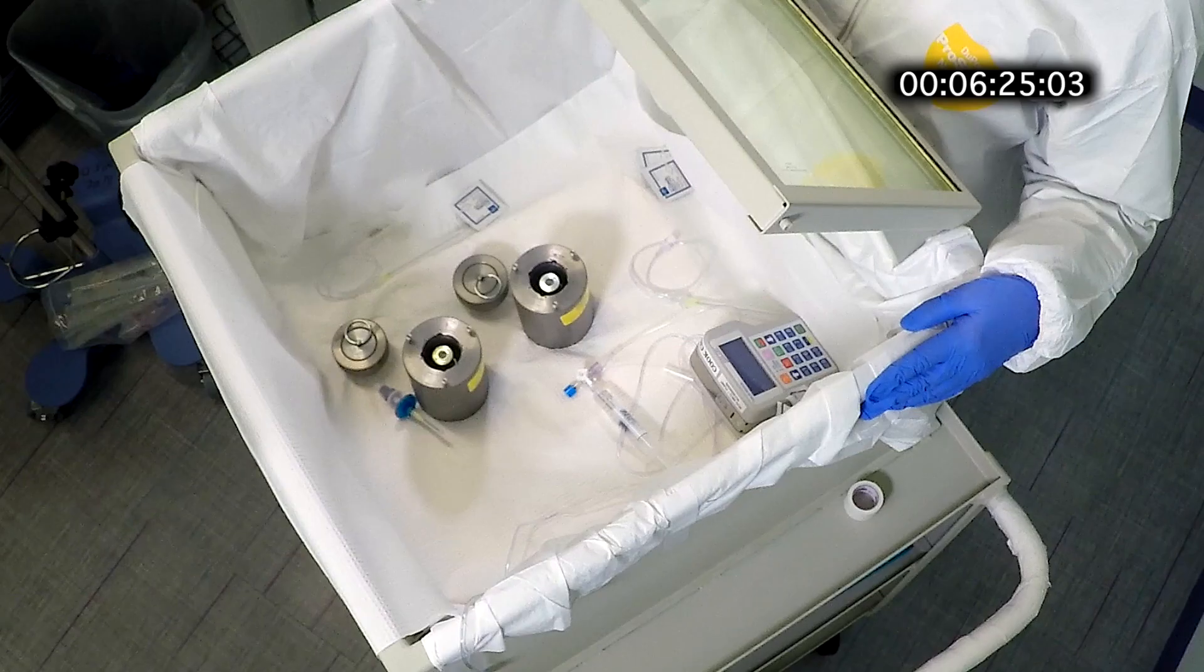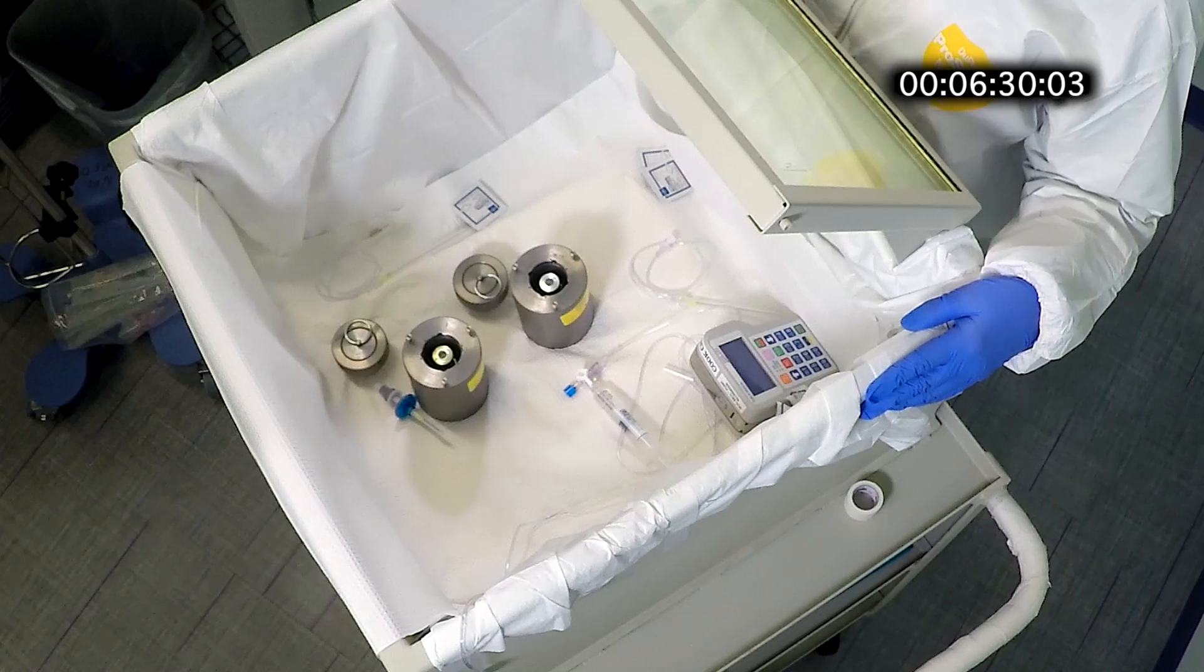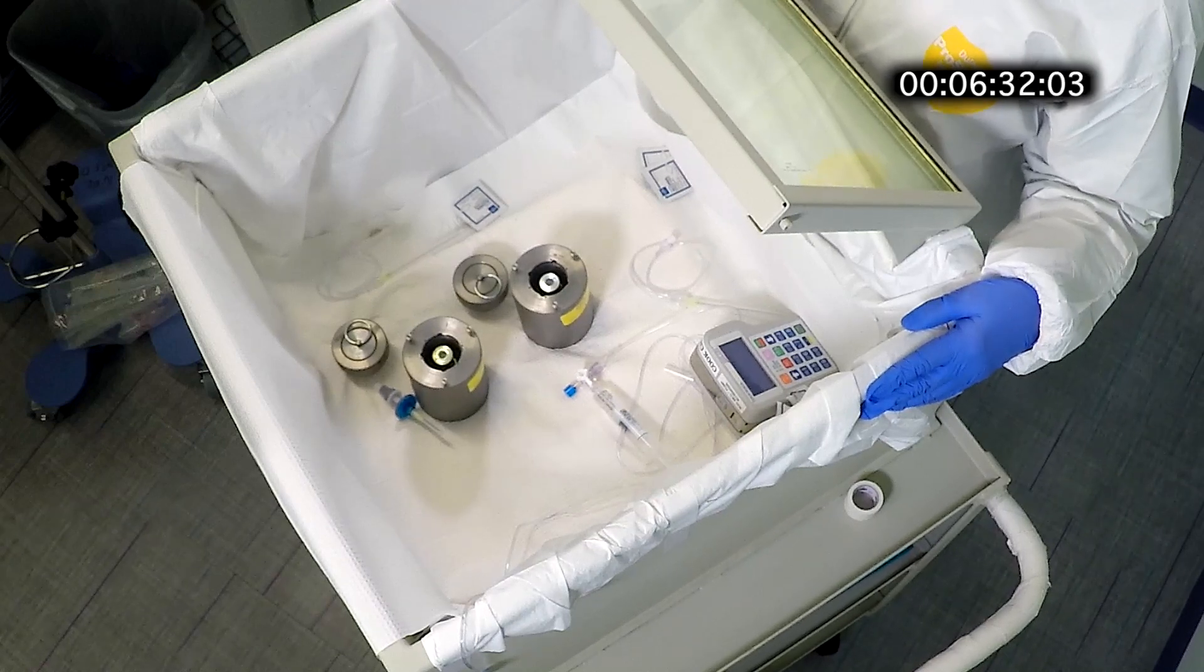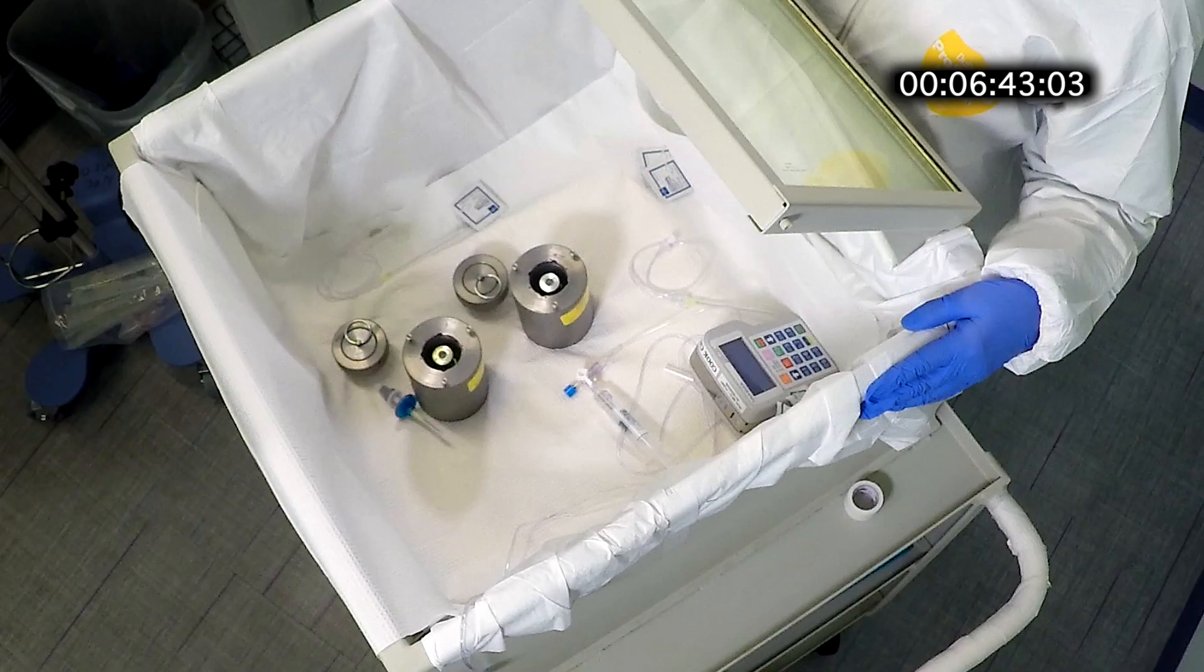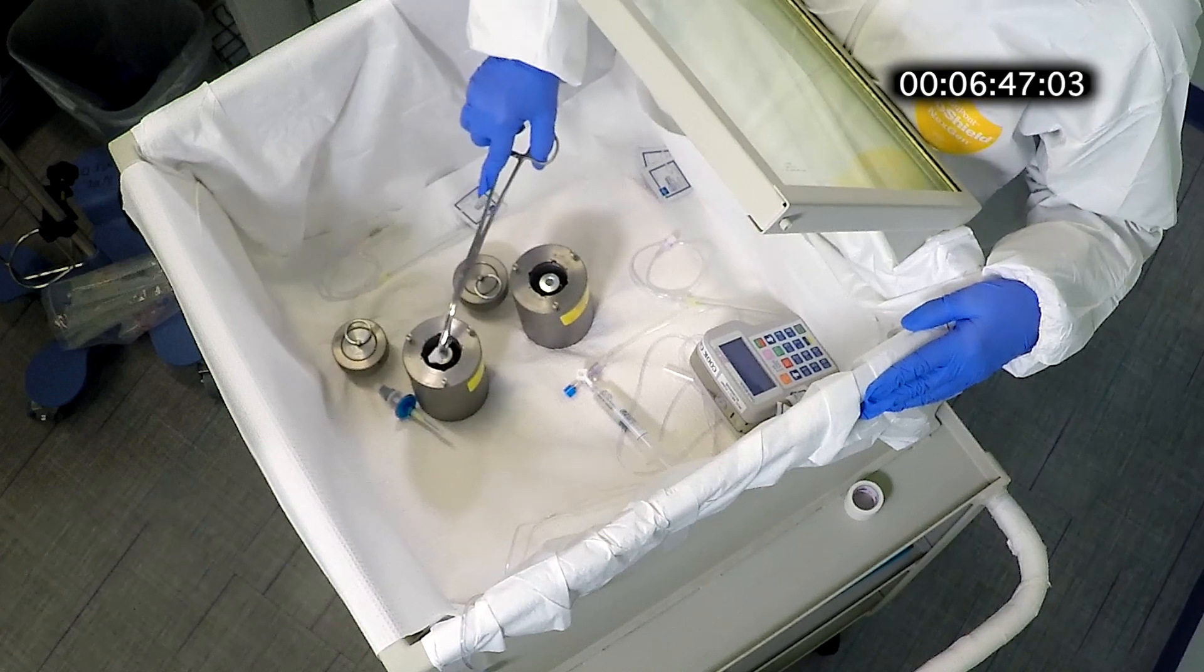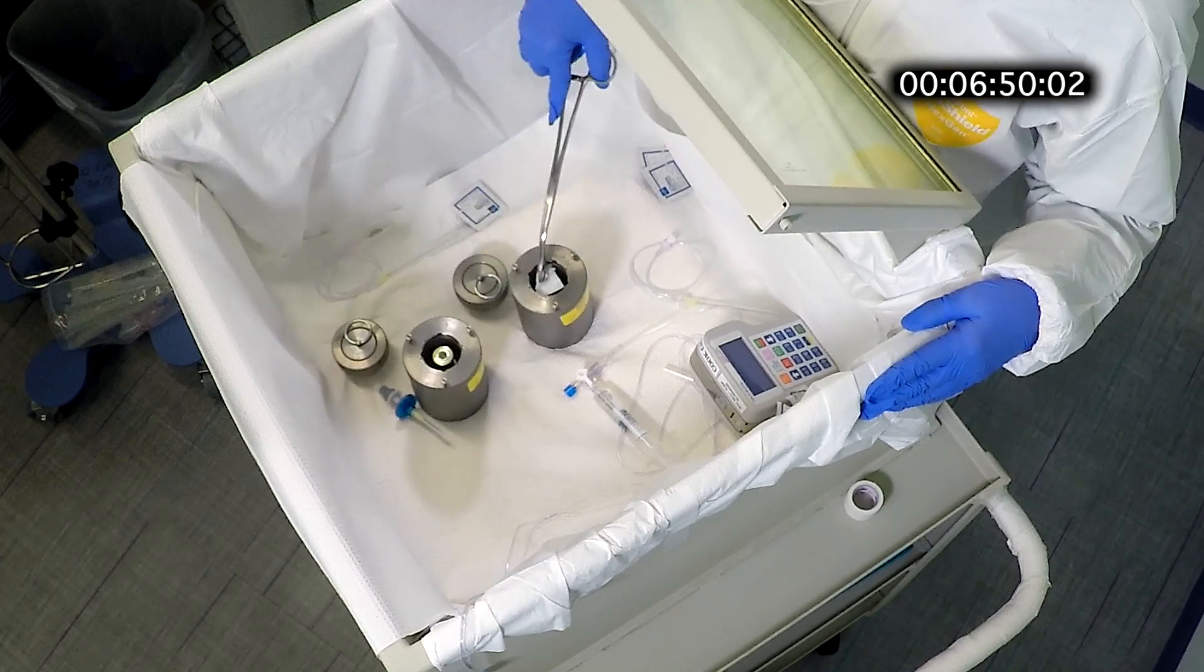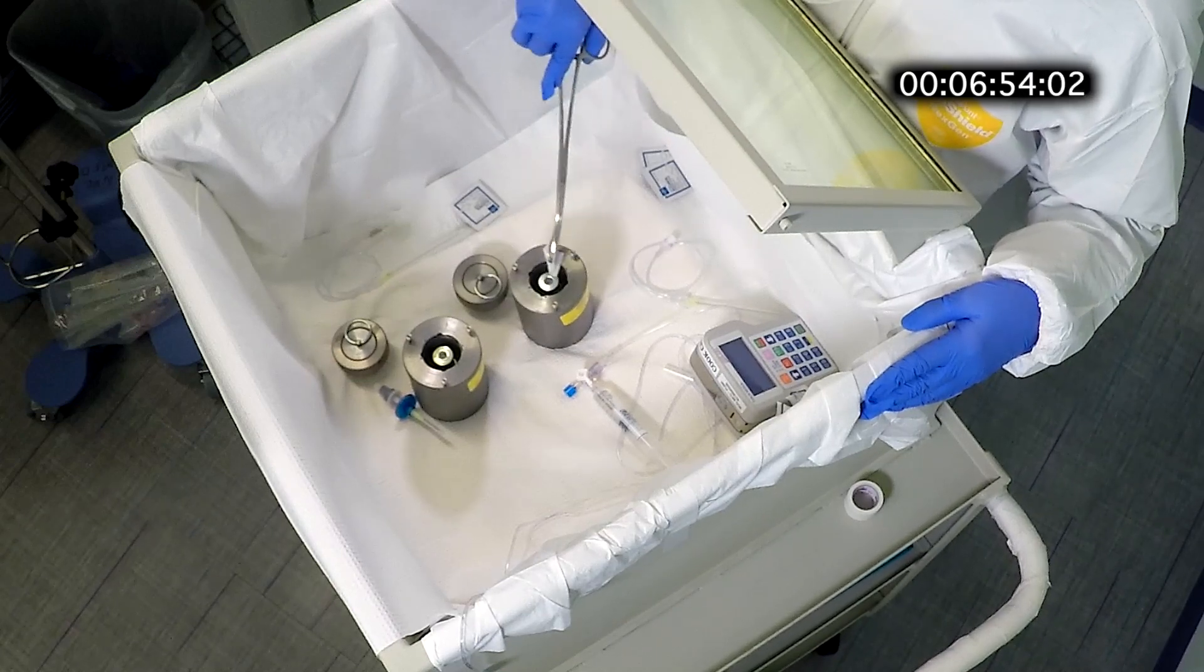Next we will show how to infuse two vials in tandem. This can be done with up to three vials at the same time but we are only going to show two. First is to swab the vials with the alcohol prep pad and then the shield top.